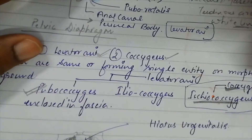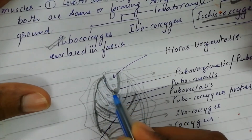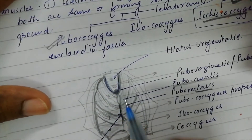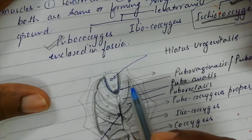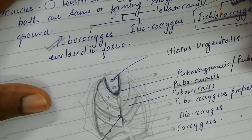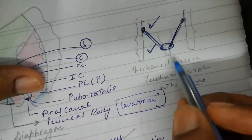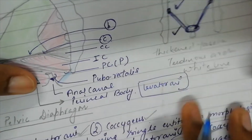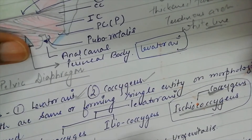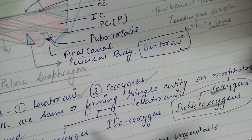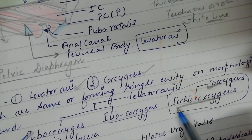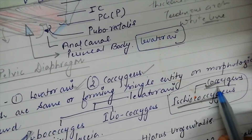It leaves a gap anteriorly, forming a sling around the structures passing through here. The muscle is divided into three parts: Pubococcygeus with various sub-components, the Iliococcygeus part, and Ischiococcygeus or coccygeus.